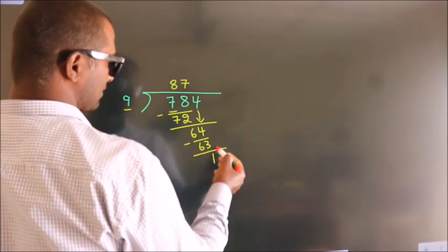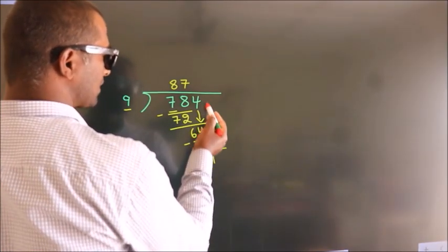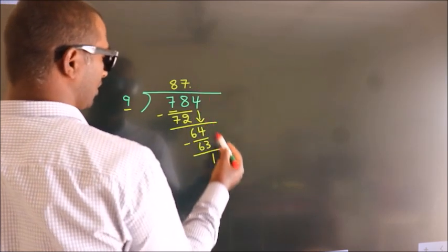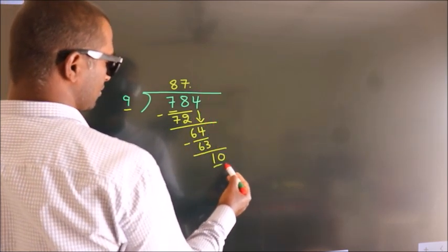After this, no more numbers to bring it down. So what we do is, we put dot take 0, so 10.